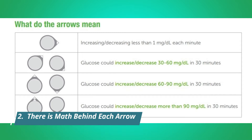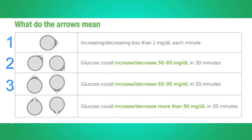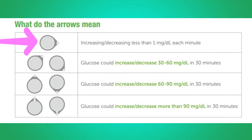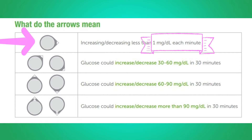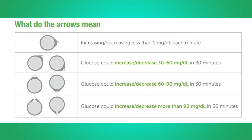Let's explain these arrows. There are only four possible arrow categories, and all categories indicate an expected change within the next 30 minutes. Firstly, there's a horizontal arrow, which does not indicate zero plus or minus, but rather a possible increase or decrease in blood glucose less than one milligram per deciliter each minute.